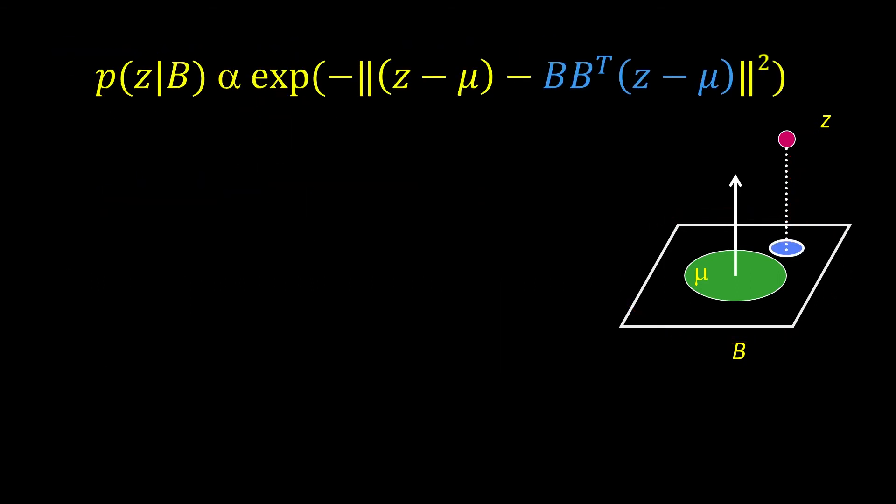So the math behind this can be written in the following way. What this says is that P of z given B, so the probability of some observation given face space, is an exponential, so it's going to be decreasing, as a function of the square of this term. And what this term is, is it's the difference, so z minus mu is this,